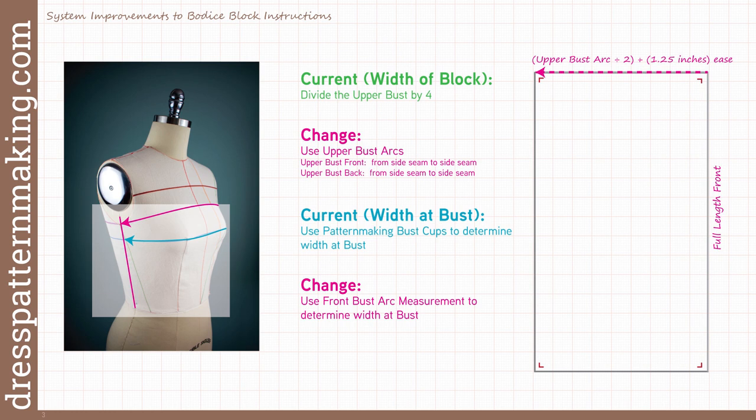This means the measurement from side seam to side seam, and the arcs should add up to the total measurement. For example, the upper bust arc front and the upper bust arc back should add up to the upper bust measurement. Similarly for the bust, the bust arc front and the bust arc back should add up to the bust measurement.